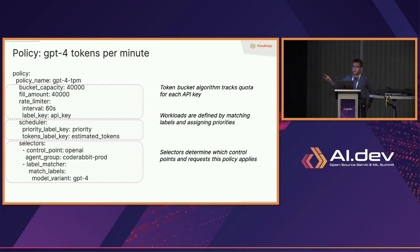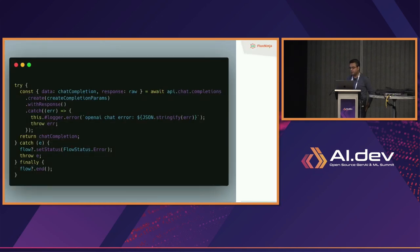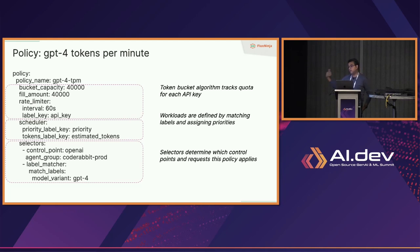Based on priority and token cost, the scheduler decides who gets to make an API call to OpenAI first and who waits. The third point is selectors — these are label filters specifying where the policy gets applied. For instance, apply this policy on the 'openai' control point, and only apply it for 'gpt4' as the model variant. You can have a separate policy for GPT-3.5 with a different limit, and a separate policy for requests per minute where Aperture assumes one token per request.